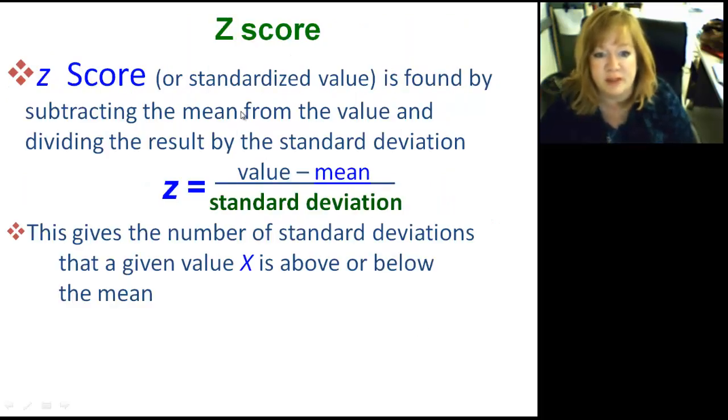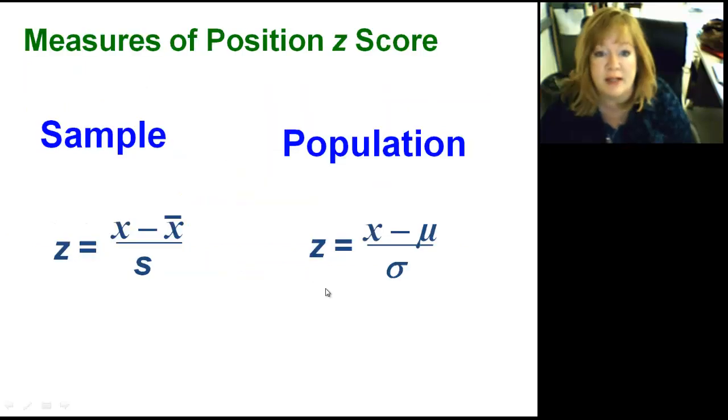Here's the z-score. A z-score is found by subtracting the mean from the value and dividing the result by the standard deviation. So it's got value minus mean over standard deviation. This gives the number of standard deviation that a value, a data value x, is above or below the mean. The formula looks like this. So your data value, remember that's x, minus the mean with the x-bar on top over the standard deviation. This is for your sample and your population.